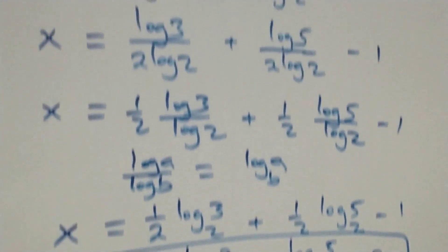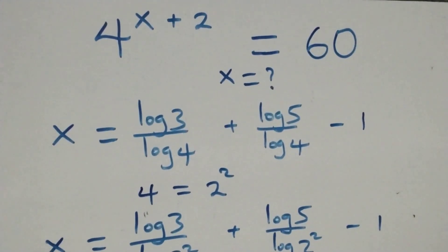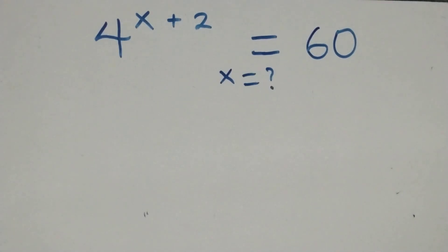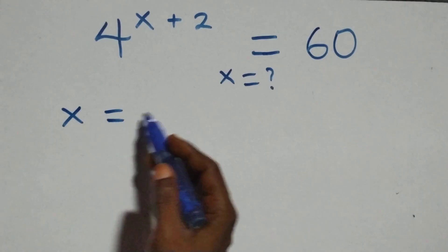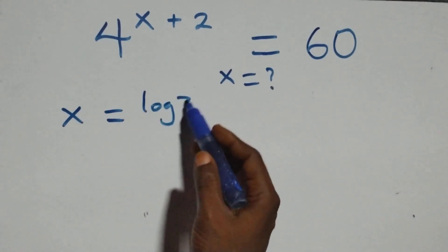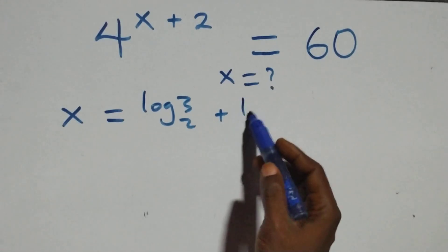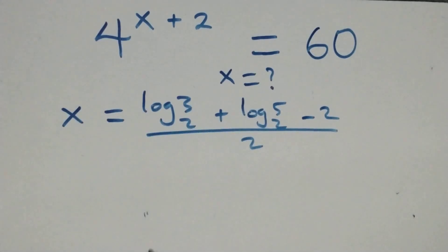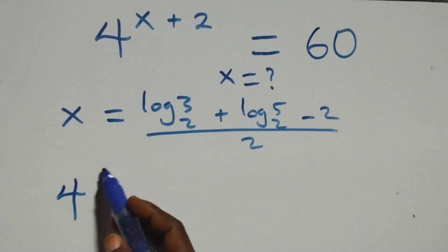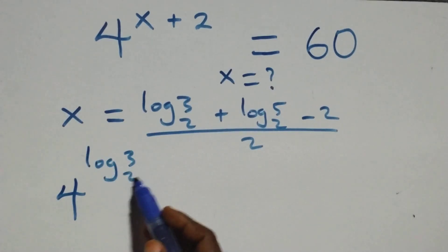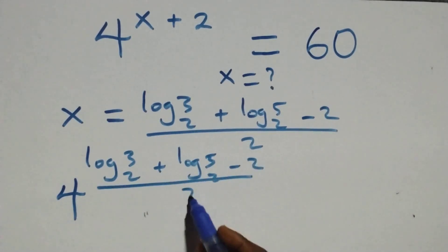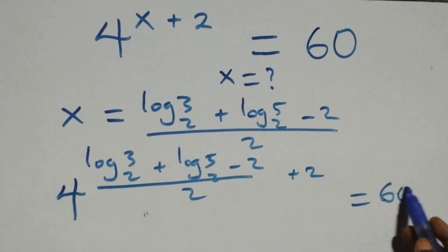Let's check if this satisfies the given problem. We substitute the value of x — which is (log₂3 plus log₂5 minus 2) all over 2 — back in. We get 4 raised to power (log₂3 plus log₂5 minus 2) all over 2, plus 2, equals 60.